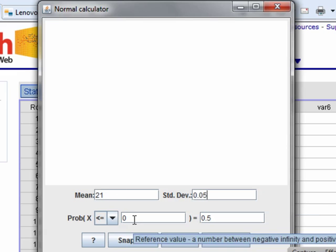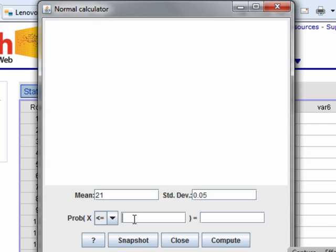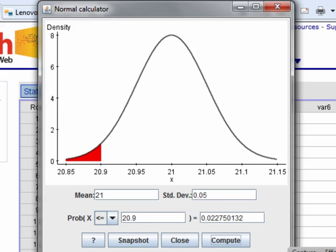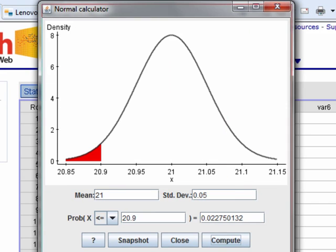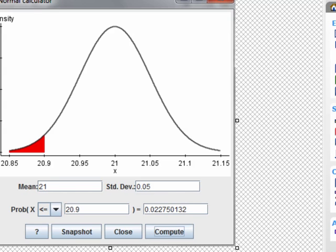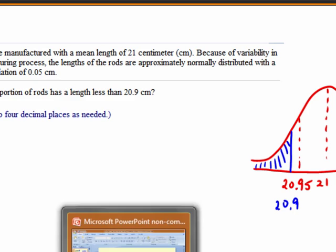And we want the area left of 20.9. Click compute and there's our result. Grab this, copy it, and drop it in here.